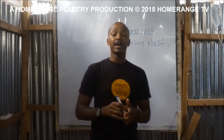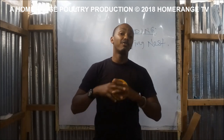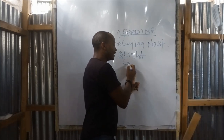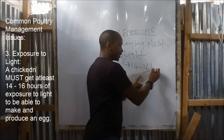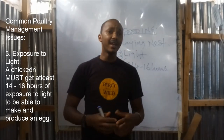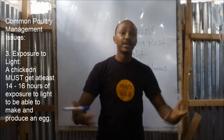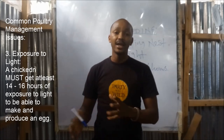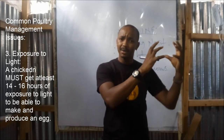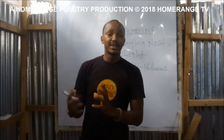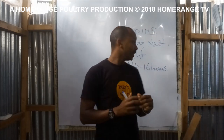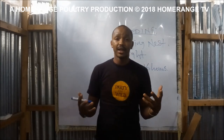The third aspect that causes egg production is the aspect of light. For a chicken to be able to produce eggs, it requires at least 14 to 16 hours of exposure to light. It's not necessary that that light has to be sunlight — it could actually be artificial light. In those instances when you find that it's getting gloomy, the weather is a bit gloomy or chilly and cold, the best thing to do to make sure your chickens don't start dropping their egg production is to install an artificial light in the poultry house.